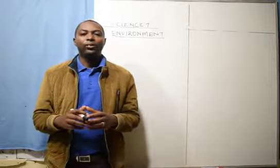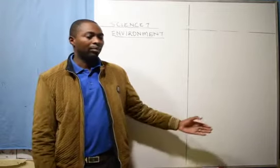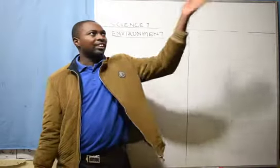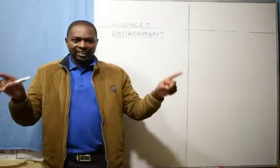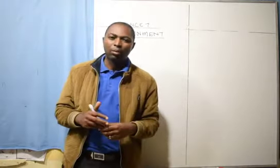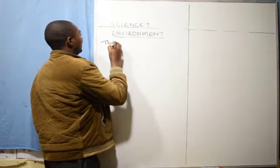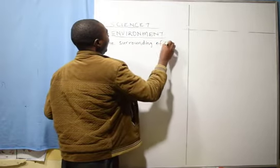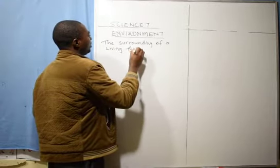Before I start by describing what environment is, I want you to turn around and observe 10 or 20 things that you can see around me. I can see some books. There are plants here. There is air here, although it is invisible. There is water here. There are animals close by. All those things that are surrounding me are what we call environment. Environment simply means the surrounding of a living thing. Anything that surrounds a living thing is what we call the environment.